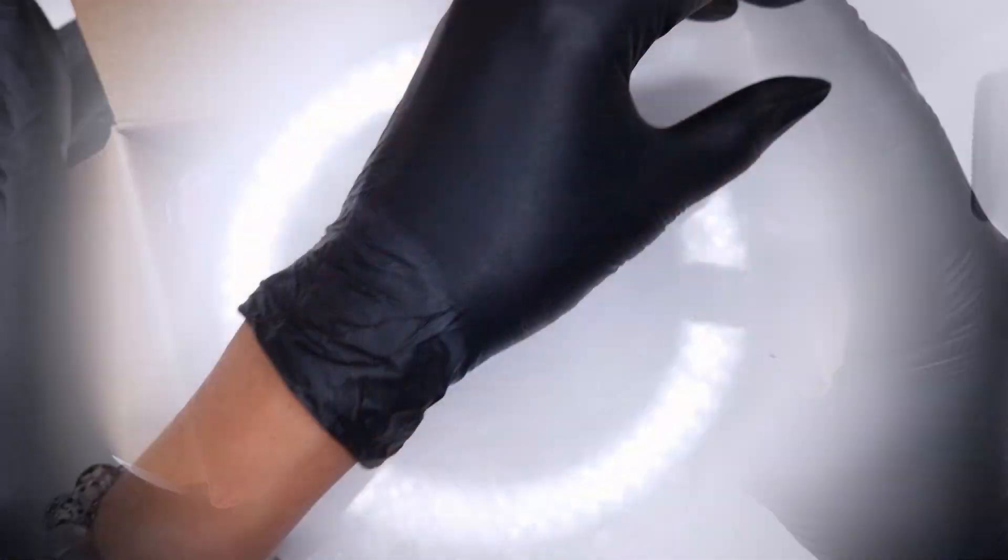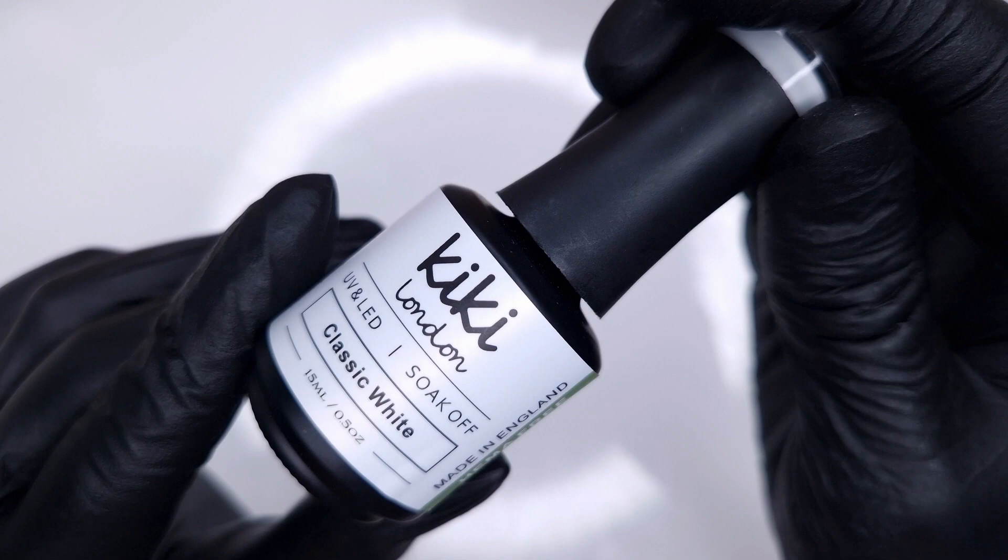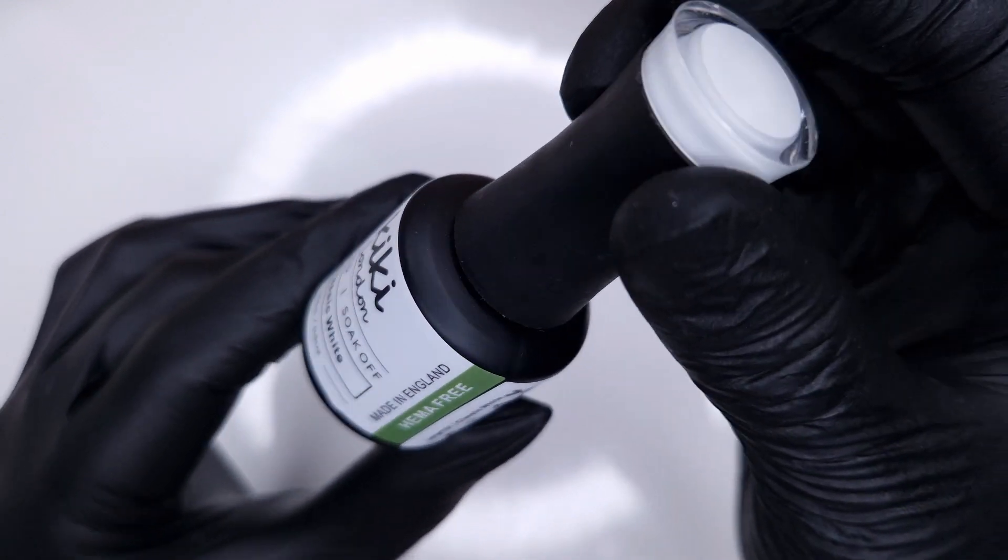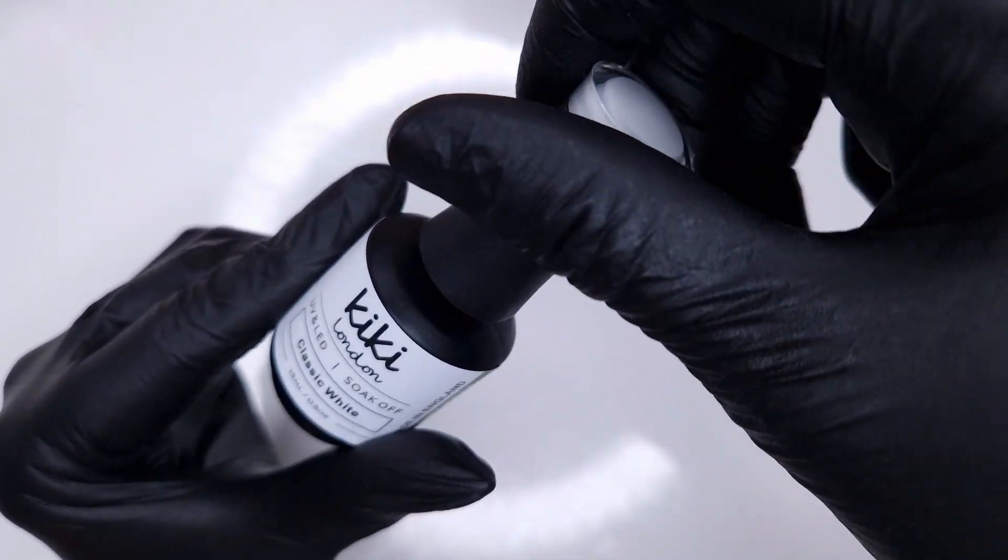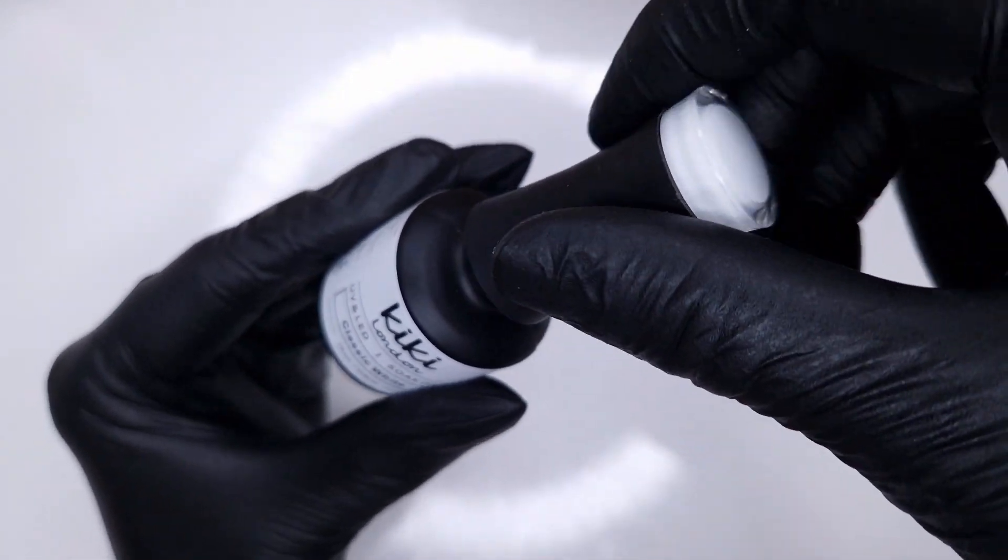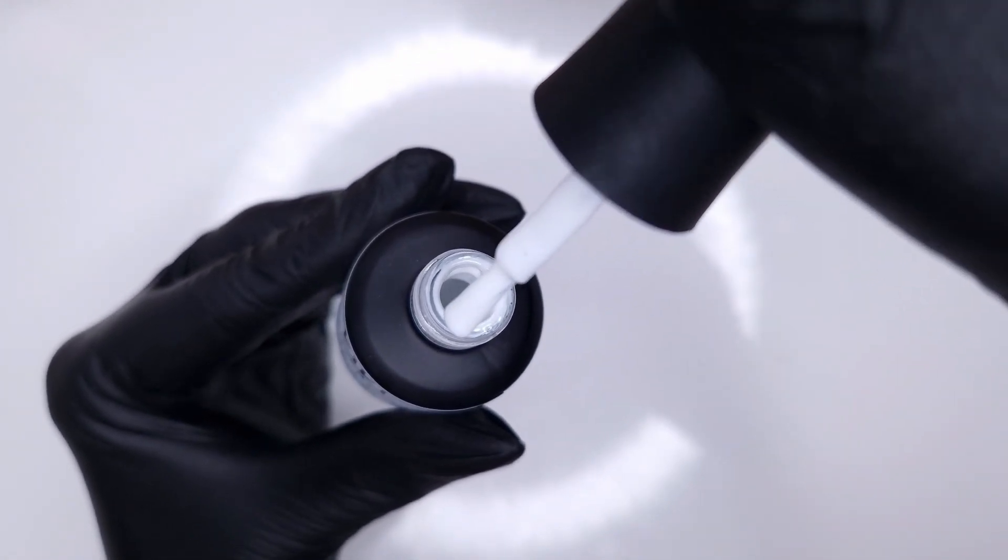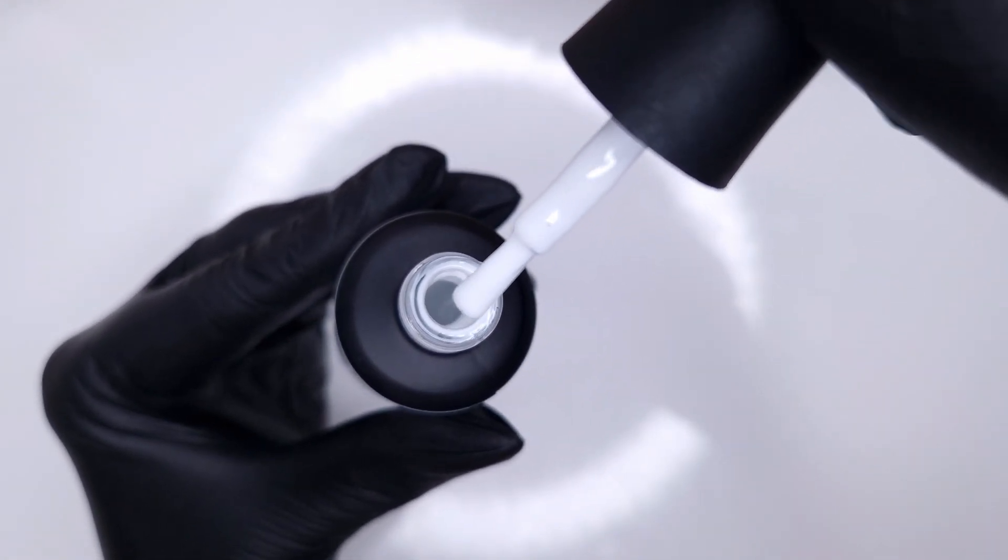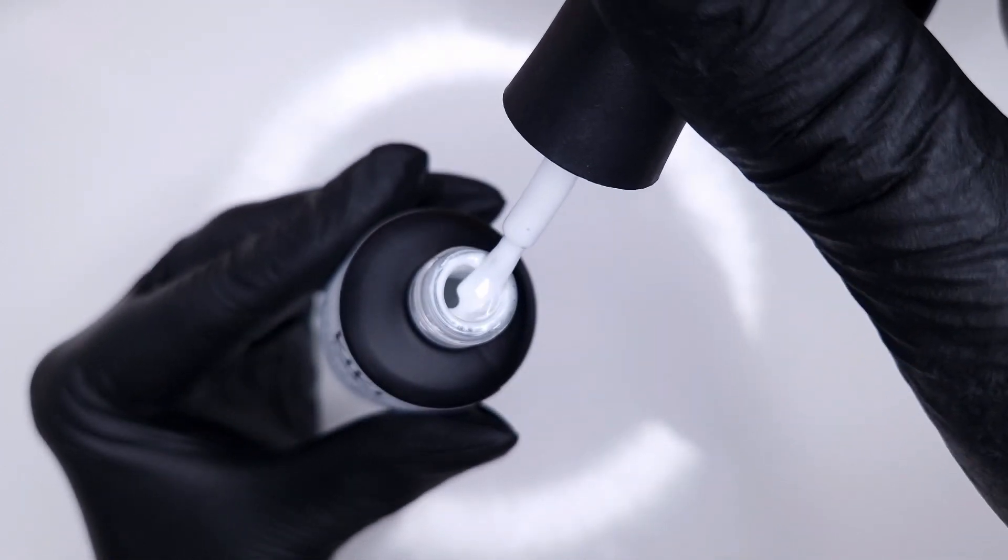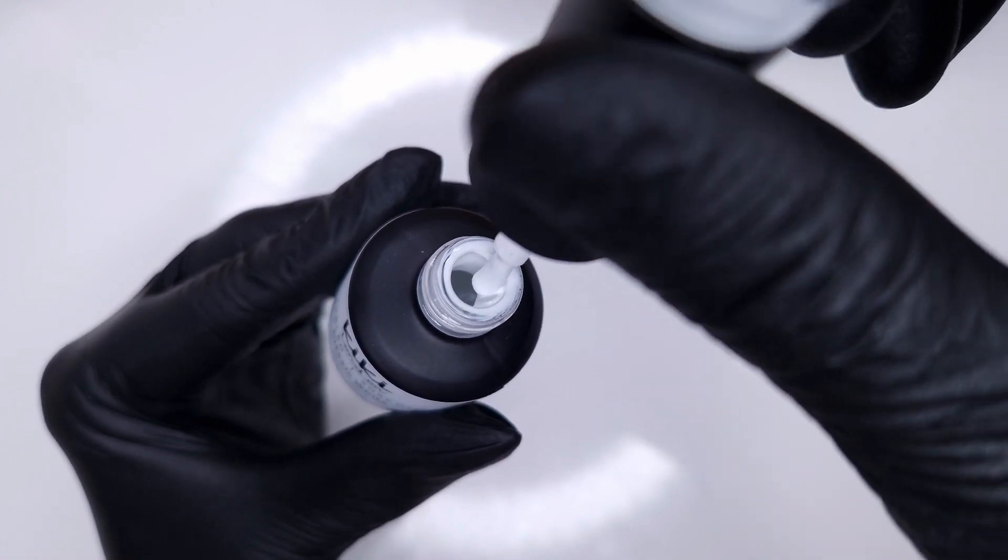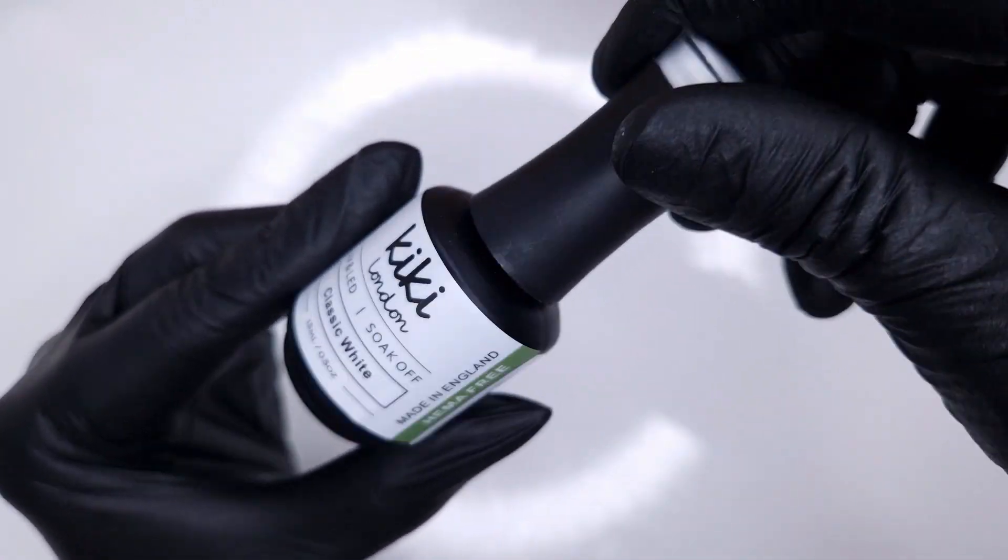Let's take a look at the six initial colors that are launching in this range. First up we have Classic White which if you are already a Kiki London user this is going to be your alternative in Hema Free range to Coconut. It's a very highly pigmented bright crisp white shade, brilliant as a background for nail art especially things like water decals and also for any kind of hand painted details.